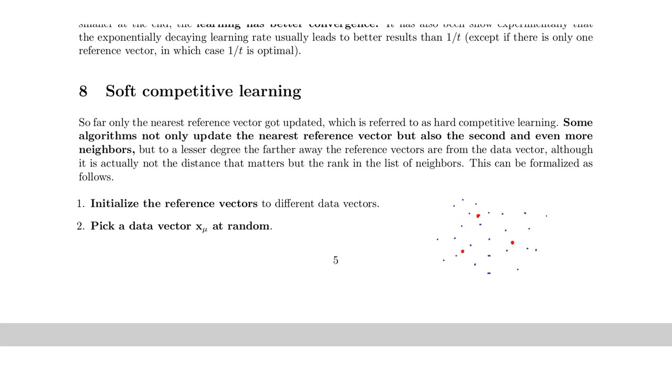So let me draw more points to the right. So we assume here that we start with an unfavorable placement of the reference vectors which are all in one corner. And you can imagine if now one of these here to the right, if this reference vector, data vector gets activated, obviously this is the winner.